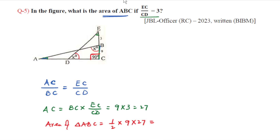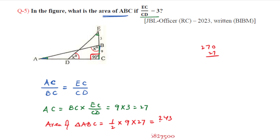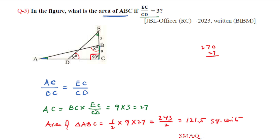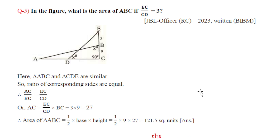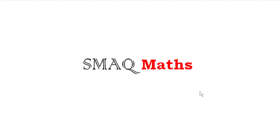Calculating: half into 9 into 27 equals half into 243, which equals 121.5 square units. So the area of triangle ABC is 121.5 square units. That is the answer to question five. Thanks for watching.